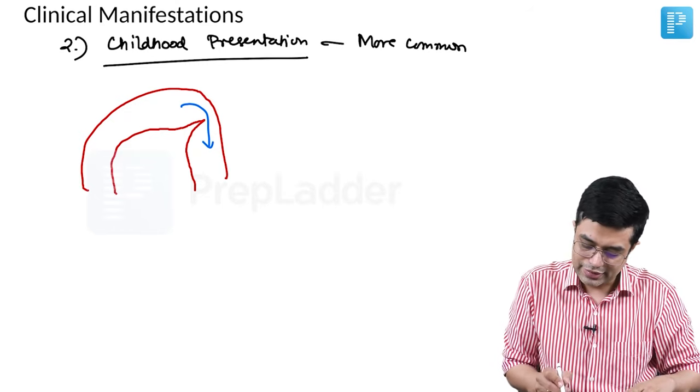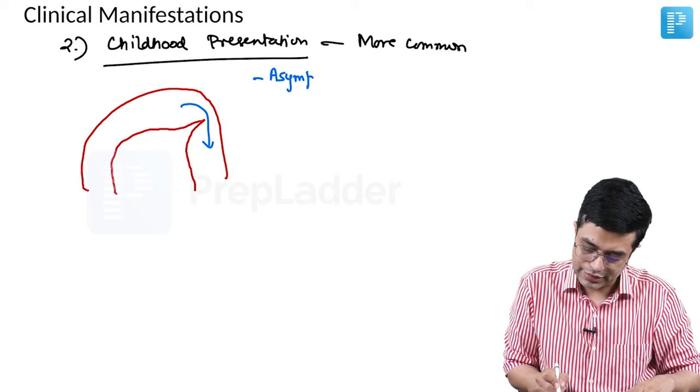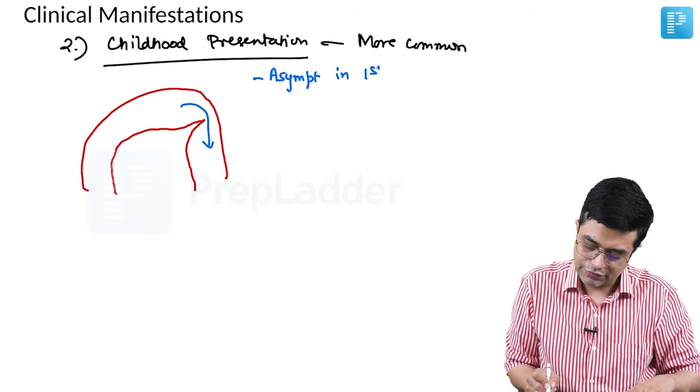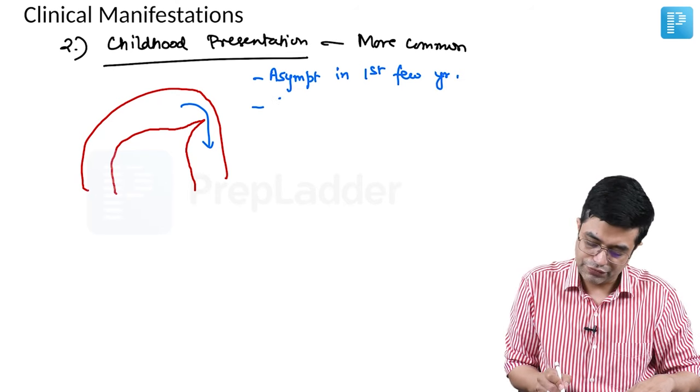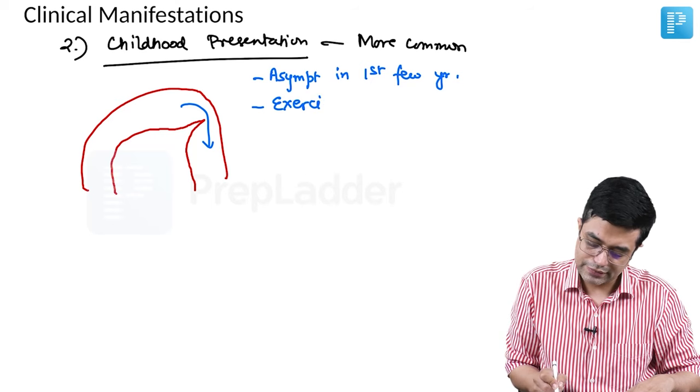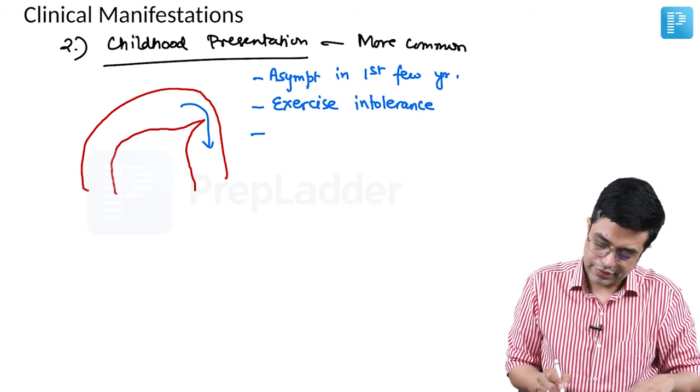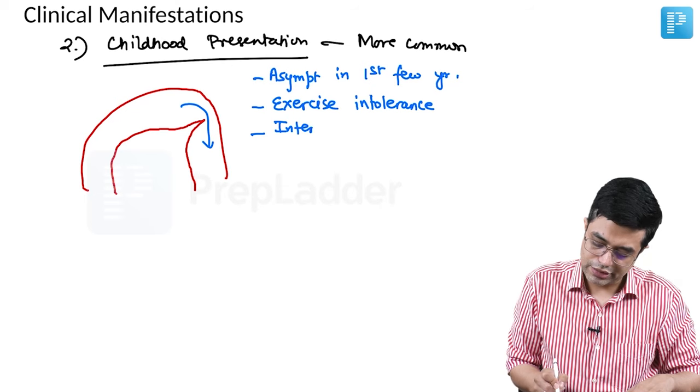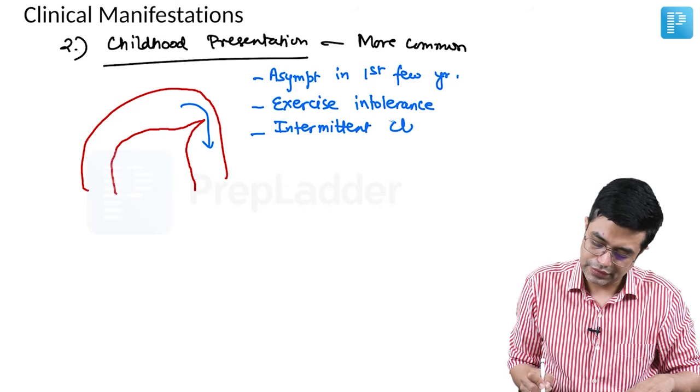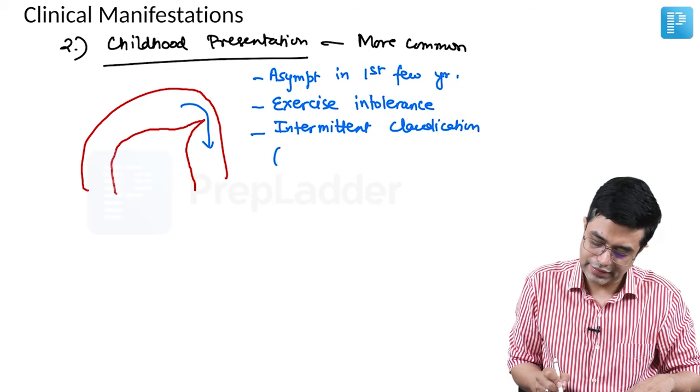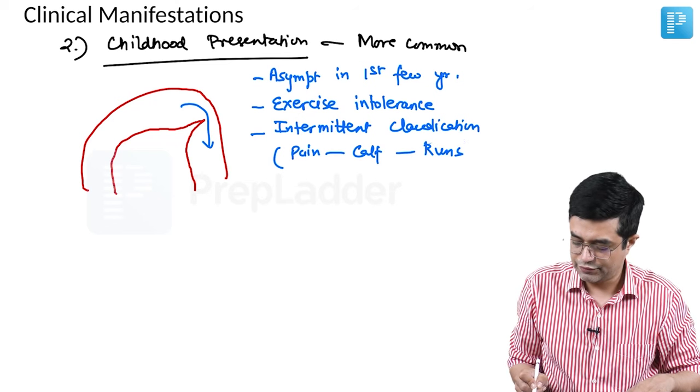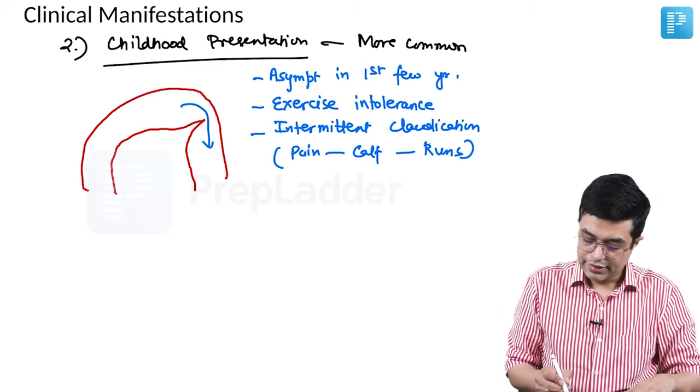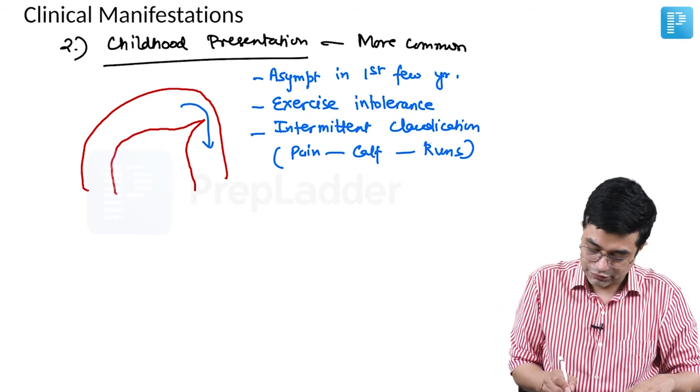What are the points about childhood presentation? First, it is more common. Secondly, it is usually asymptomatic in the first few years of life when requirements are less. Later on, it will manifest with features of exercise intolerance. They will manifest features of intermittent claudication-like symptoms, that is pain in the legs, pain in the calf muscles when child runs, which will be relieved when the child takes rest.